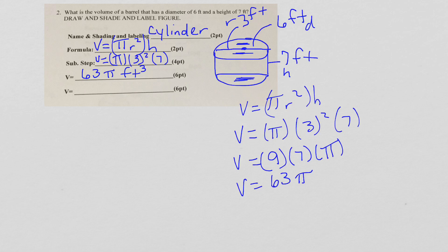V equals 9 times 7 times pi, so V equals 63 pi feet cubed. Going to the calculator and putting 63 times pi in, I get 197.92, so my decimal answer is 197.9 feet cubed. The 2 tells me to leave my 9 alone.